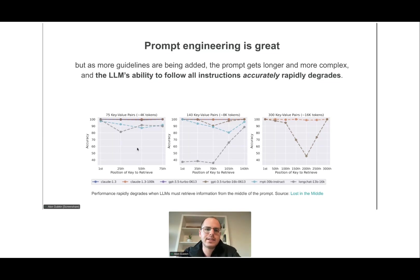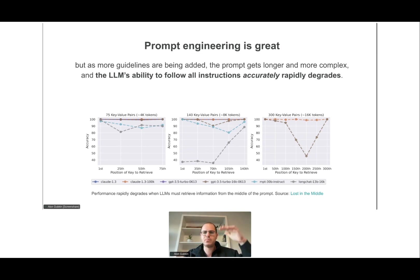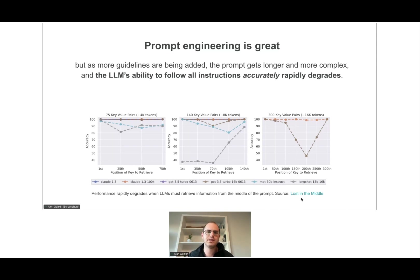You can actually see this in graphs from a paper called 'Lost in the Middle.' It shows that when the answer to a question lives in the middle of a prompt — for different prompt sizes — performance actually degrades. Basically, as the prompt gets longer, accuracy degrades.